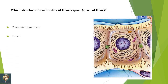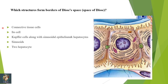Next: which structures form the borders of the space of Disse? In this diagram you can see hepatocytes, the space of Disse, and sinusoidal epithelial cells along with Kupffer cells forming the borders. Options: connective tissue cells; Ito cells — Ito cells are present within the space of Disse, not forming the borders; Kupffer cells along with sinusoidal epithelium and hepatocytes — yes, this is correct. The correct option is C.